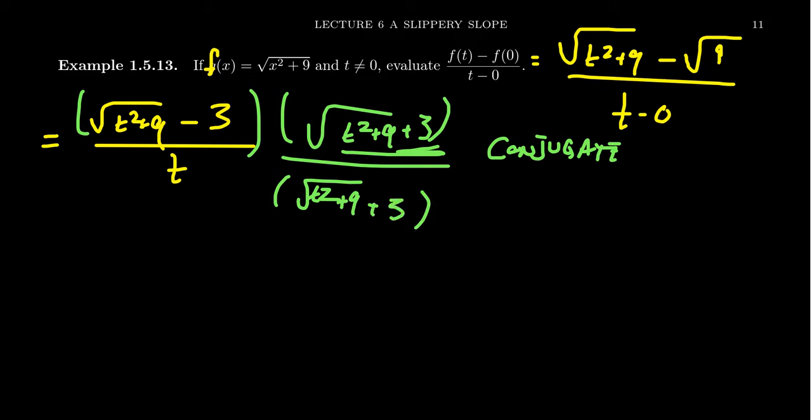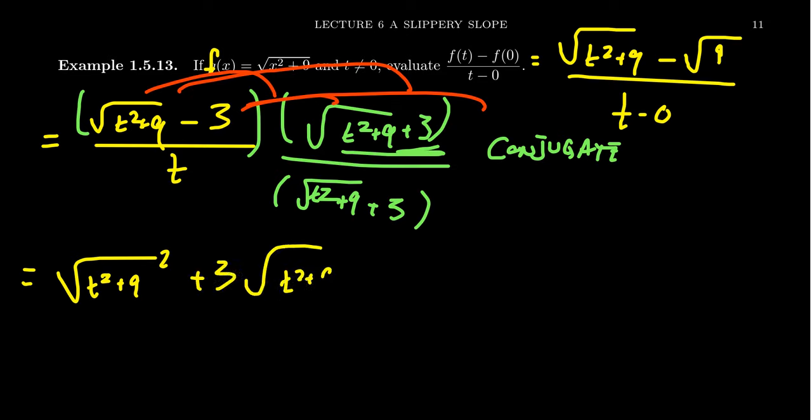And so in the numerator, I want you to FOIL this thing out. Do all of the possibilities. You're going to get a square root of t squared plus nine quantity squared. You're going to get a plus three times the square root of t squared plus nine. You're going to get a minus three times the square root of t squared plus nine. And then finally, you're going to get a minus nine.